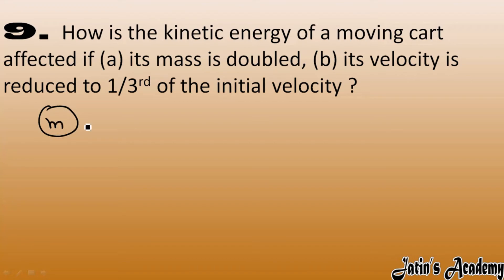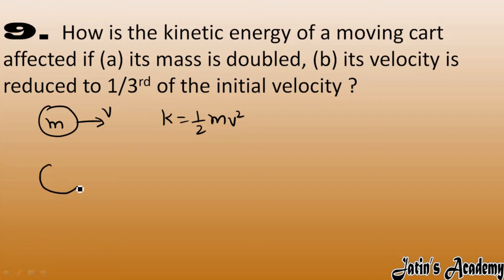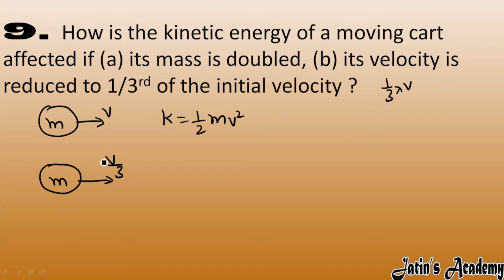Next part: mass m moving with velocity v, so kinetic energy is ½mv². Now velocity is reduced to one third, meaning the final velocity is v/3 — one third of the initial velocity v.